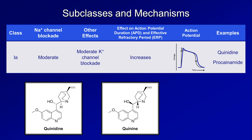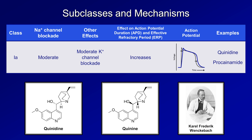Quinidine was first prescribed for atrial fibrillation by Karl Friedrich Wenckebach of type 1 second degree AV block fame, and it was a different cardiologist who later observed that quinidine seemed to be more effective for arrhythmias. However, quinidine is still not particularly effective, and it's poorly tolerated and thus rarely used today.